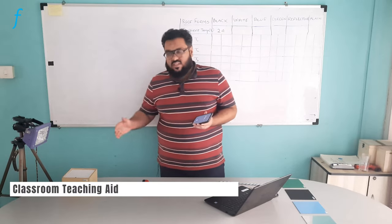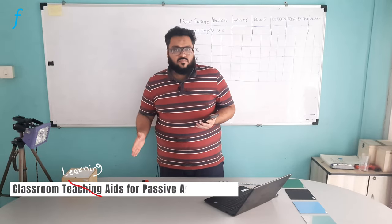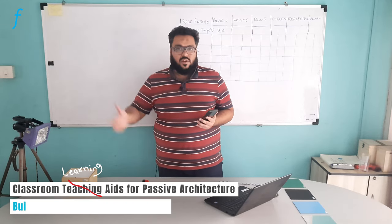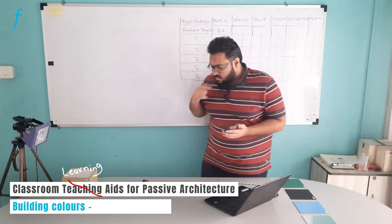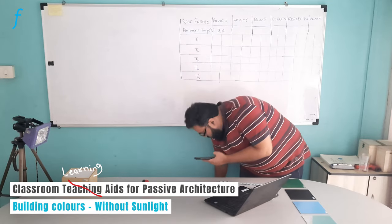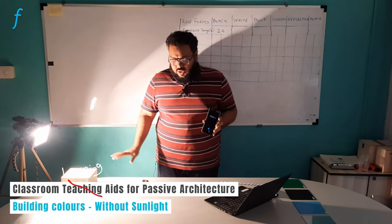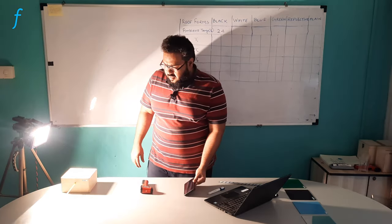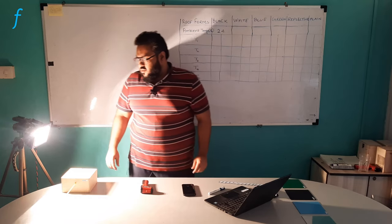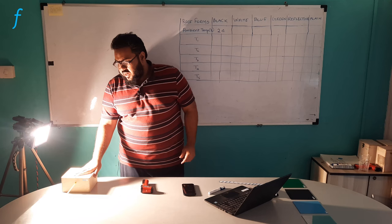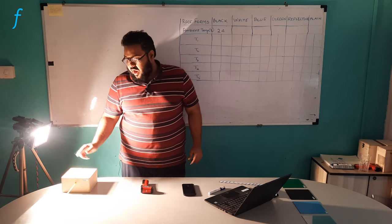I will simultaneously start the timer, which I also have here, and the halogen tube. I will do this experiment for five minutes and I will take readings after every one minute. So I have started my timer and the halogen tube.